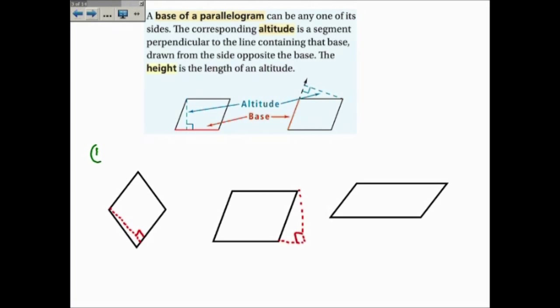So in this first one, if we look at it, the altitude is the red line that I've drawn in here, and so the base can be either this one or this one. It's perpendicular to the altitude. In the second one, the 90 degree we have is this one. And so perpendicular to that would be the top and the bottom, or the bases.